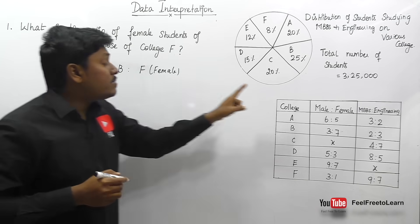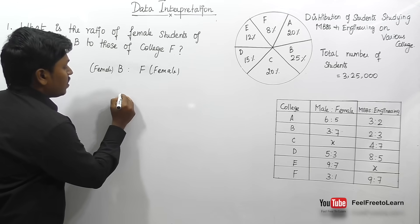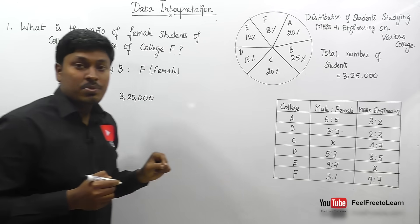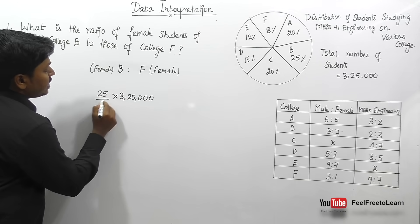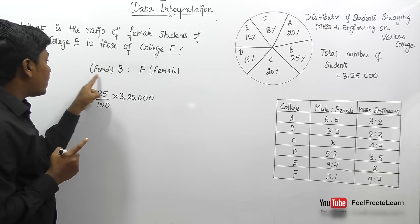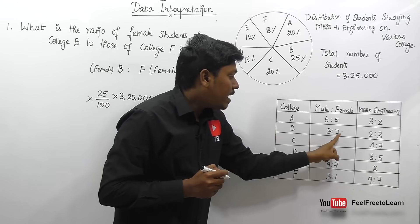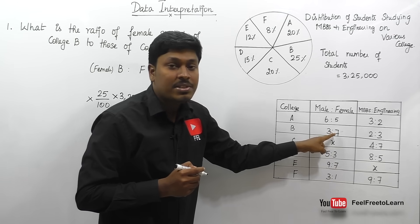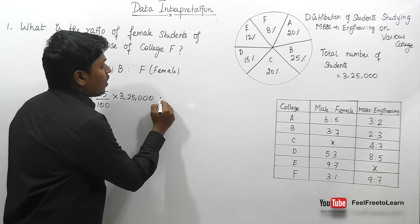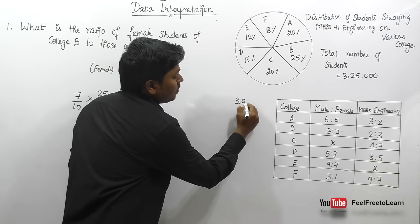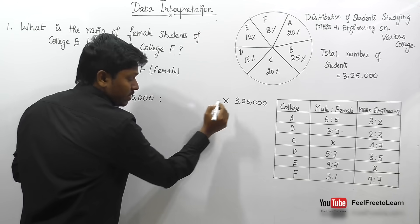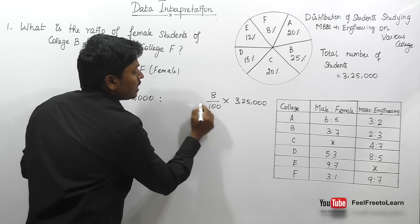College B has 25% of the 3,25,000 total students. The male-to-female ratio in college B is 3:7, so females are 7 out of 10. For college F, it has 8% of 3,25,000 students, with a male-to-female ratio of 3:1, so females are 1 out of 4.